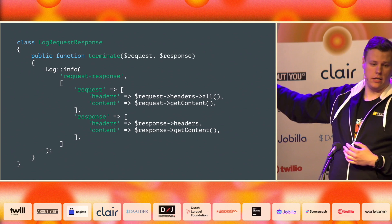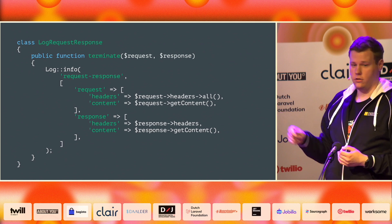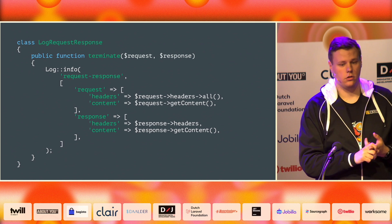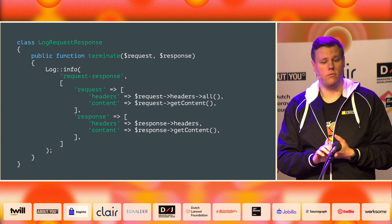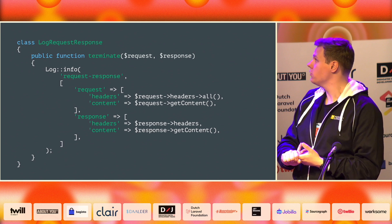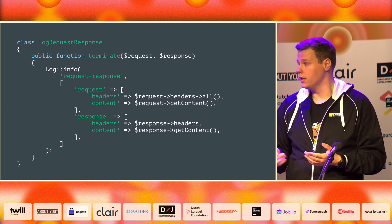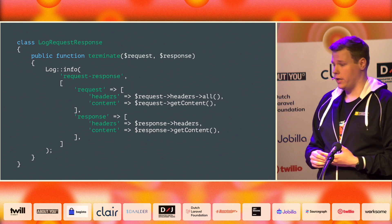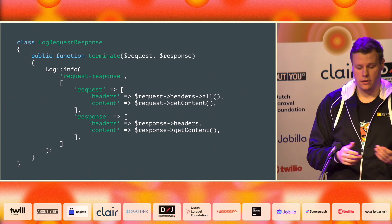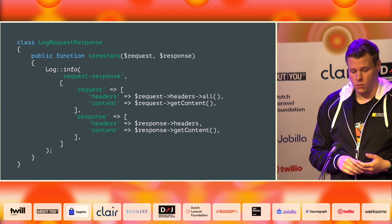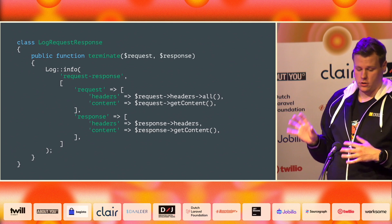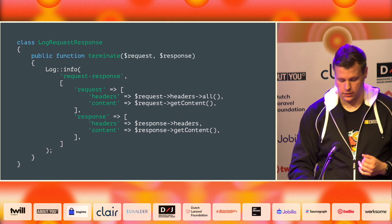If you open up the index.php file, there's a kernel terminate method. The request is already sent to the application, the application creates a response and sends it to the browser, and after that the application closes everything up — it closes the PHP connection, and then this terminate is called. Here you have the actual request and response available, and you can log that data away. You can use the logged-in user from the request, or any other data you want. This is a really basic start.